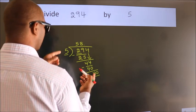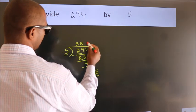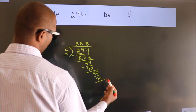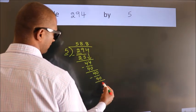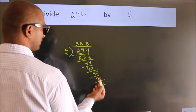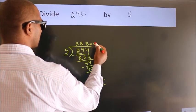When do we get 40 in the 5 table? 5 eights, 40. Now we subtract, we get 0. We got remainder 0. So this is our quotient.